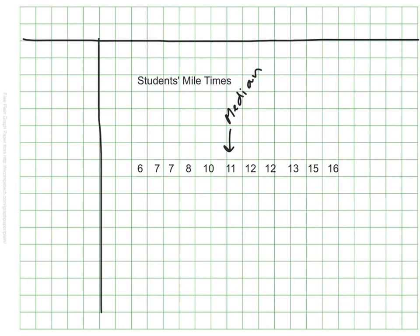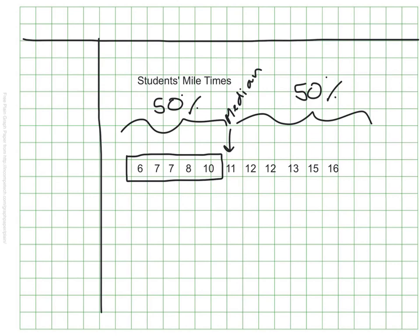Hopefully you found that this time there is one number directly in the middle, and that is this 11. That's our median. Remember what this means. It means that 50% of the students run a mile in 11 minutes or more, and 50% of the kids run the mile in 11 minutes or less. This gives us some good information, but let's break it down even further. These five numbers represent the bottom half of our data, and these five numbers represent the top half of our data.